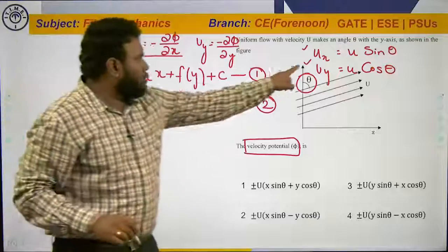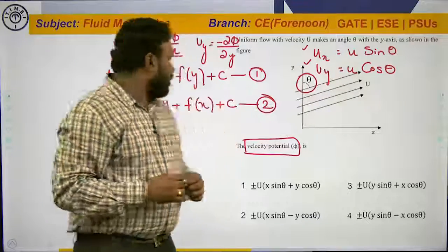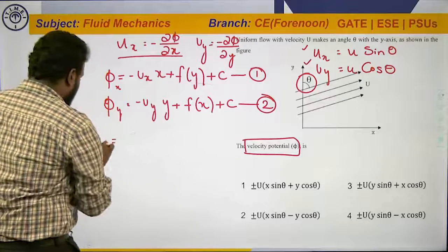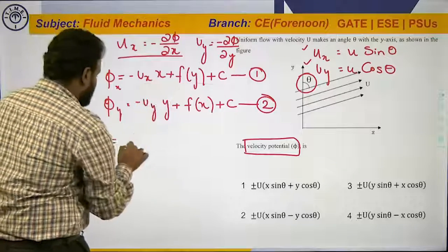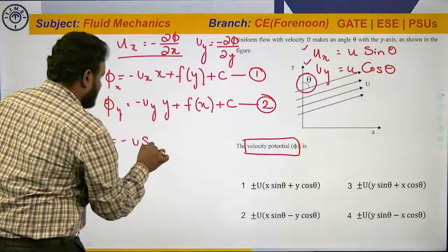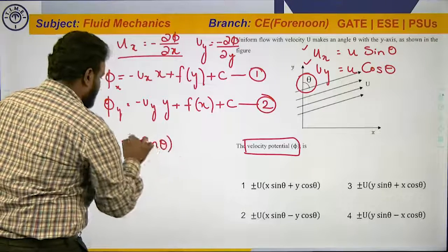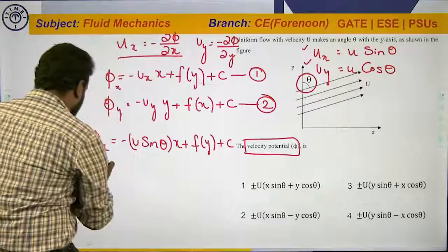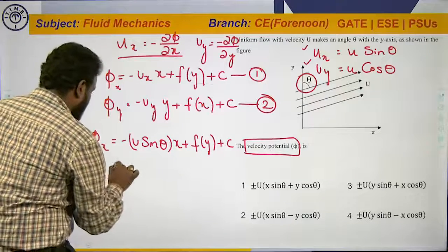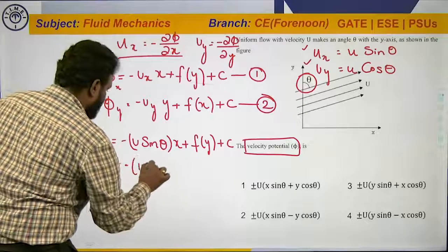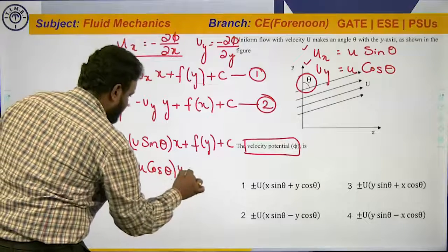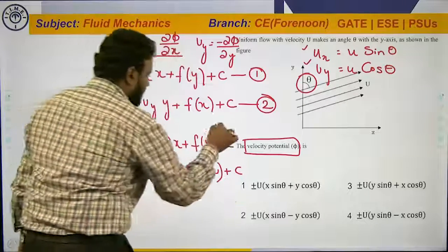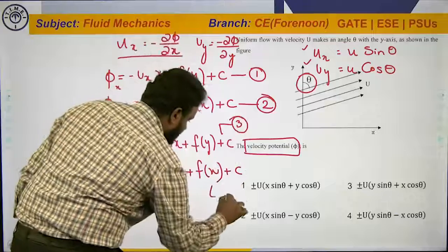We know that ux = u sinθ and uy = u cosθ. Substituting these values, equation 1 becomes: φ = −u sinθ · x + f(y) + c (equation 3), and equation 2 becomes: φ = −u cosθ · y + f(x) + c (equation 4).